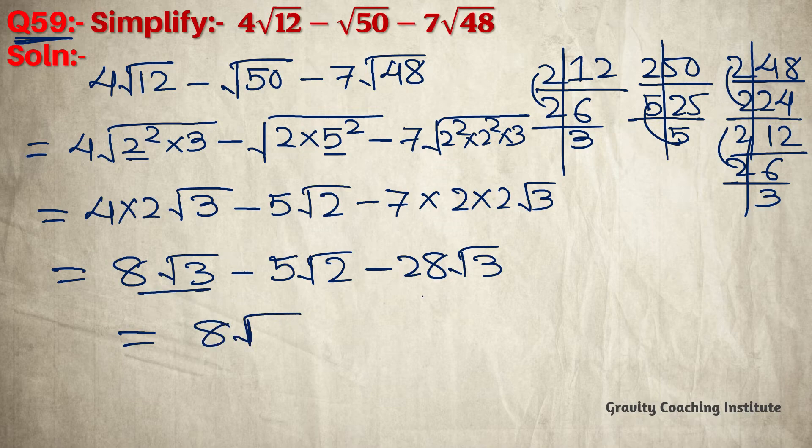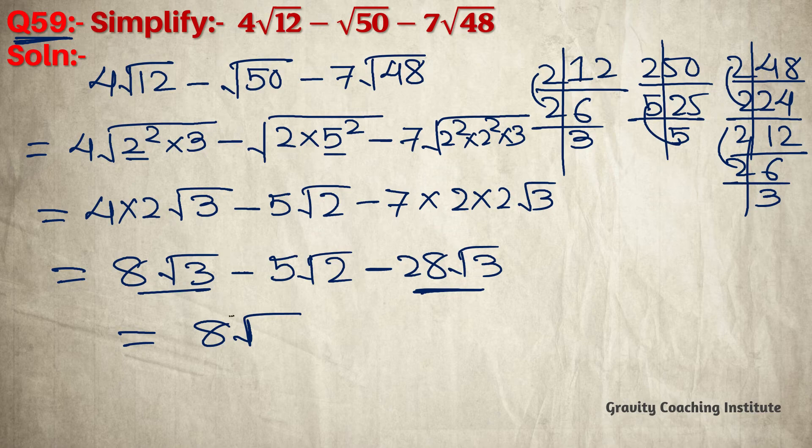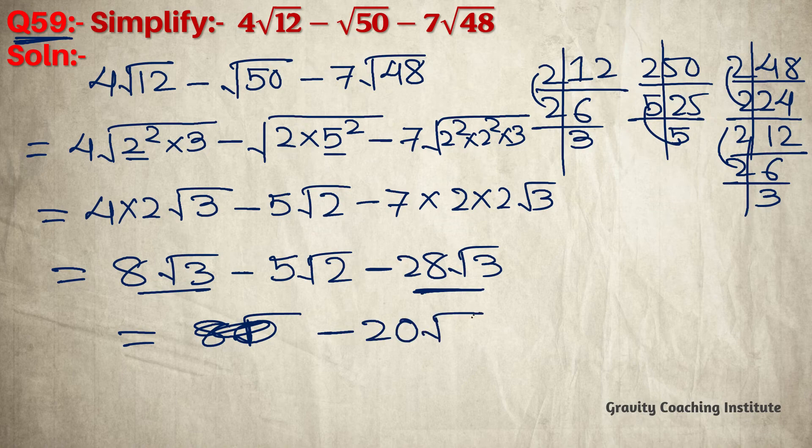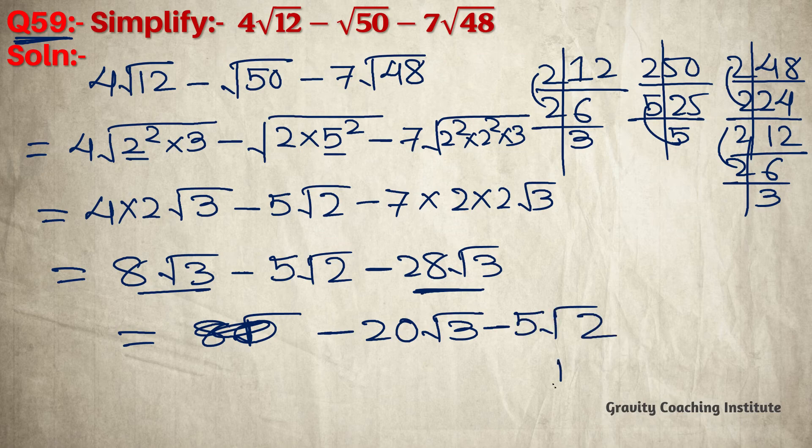8√3 and 28√3 are like terms, so if we subtract 8 minus 28, we get -20√3 minus 5√2, which is the required answer.